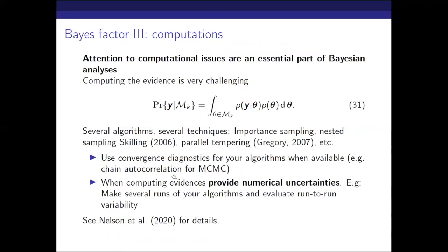When you are computing the evidence, don't just give one value and stop there. You have to use convergence diagnostics for your algorithm — make sure that your numerical scheme is converging. Maybe look at the chain autocorrelation when using MCMC (Monte Carlo Markov Chain). When you compute the evidences, provide numerical uncertainties: make several runs of your computation, try it five or ten times, look at the variability of the different estimates, and provide it in your paper to show that your numerical uncertainty is below the threshold of detection and doesn't change your decision on the data.